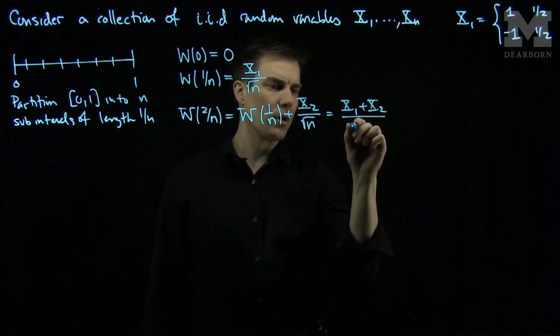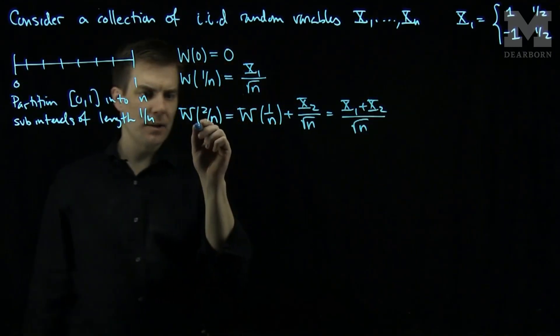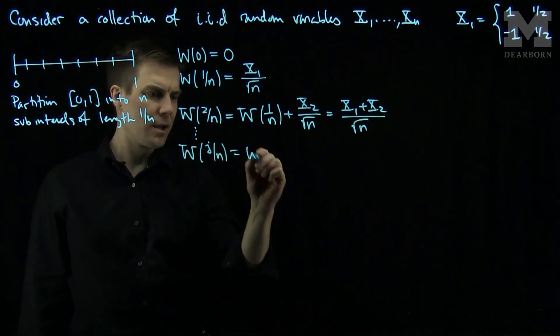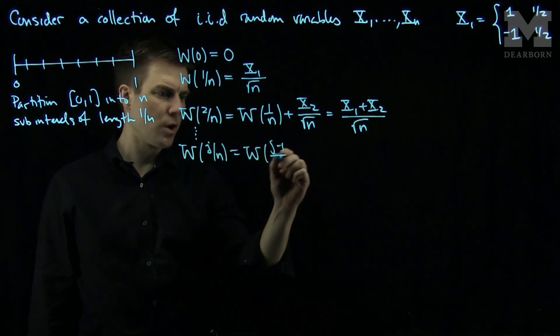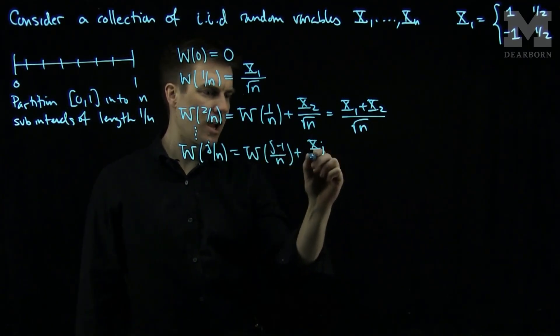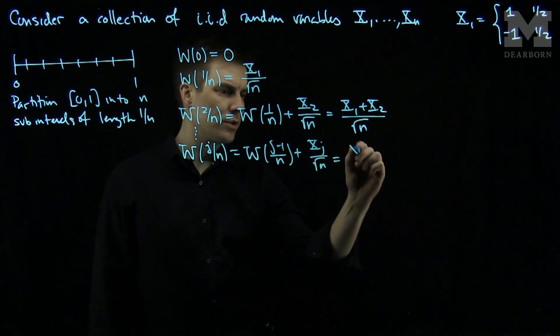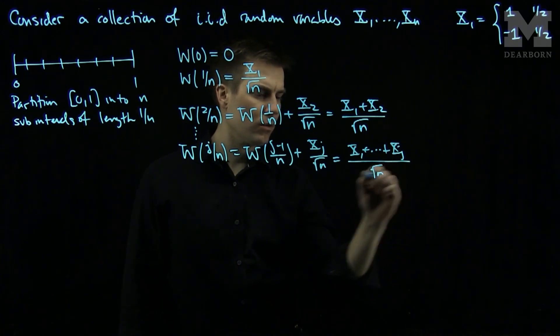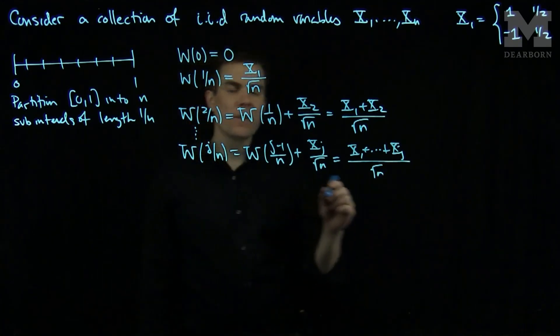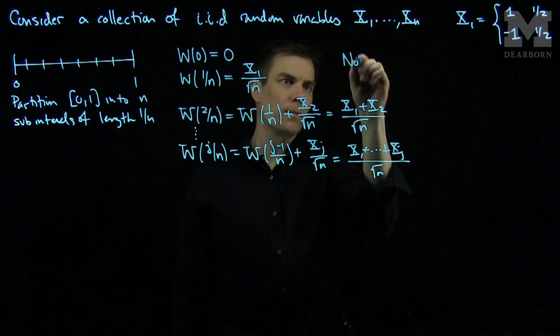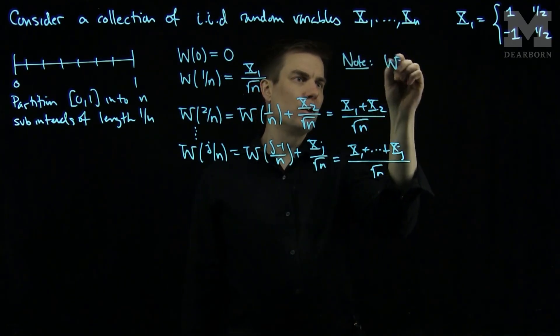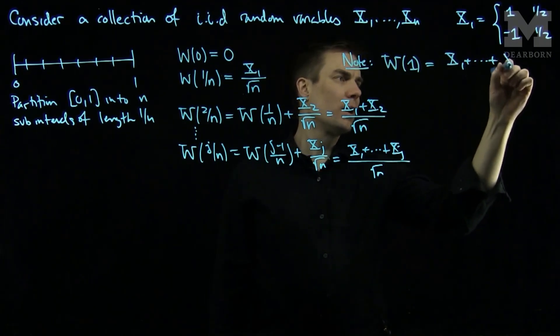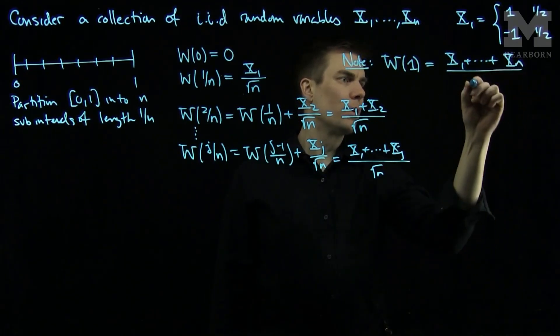We will define w2 over n to be w1 over n plus x2 over root n, or x1 plus x2 over root n. And recursively, we will say that wj over n is wj minus 1 over n plus xj over root n, which is x1 plus xj over root n. And finally, we will see that w1 will be x1 plus xn over root n.